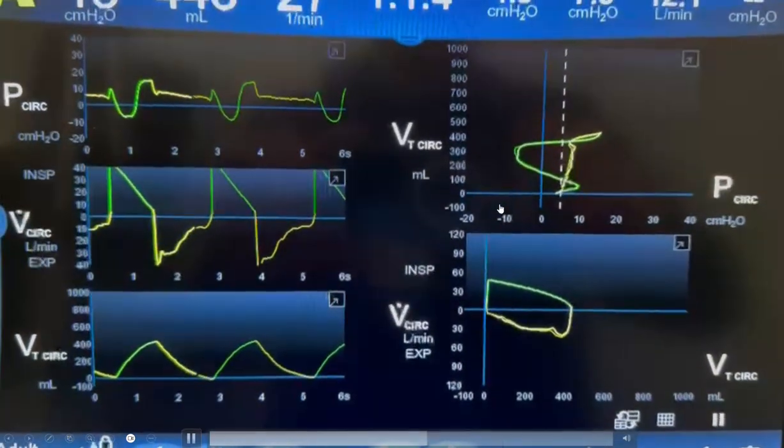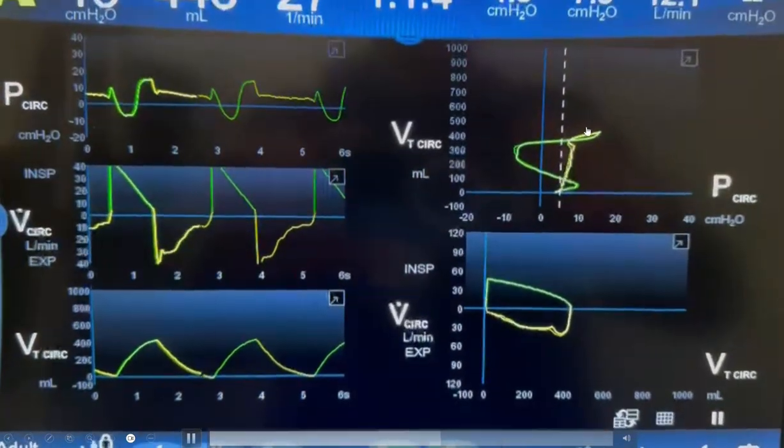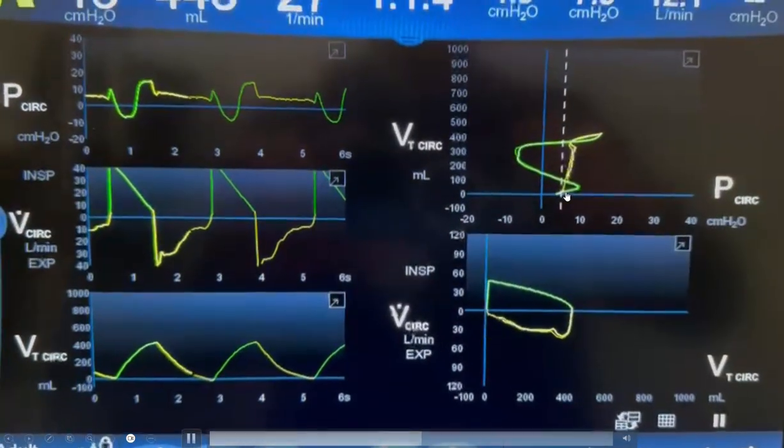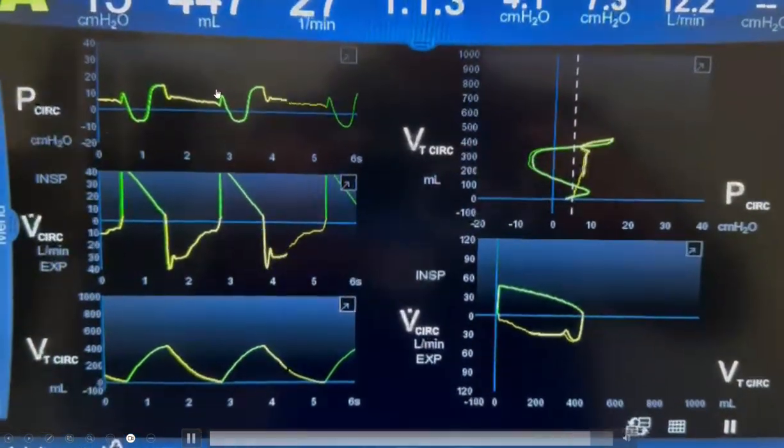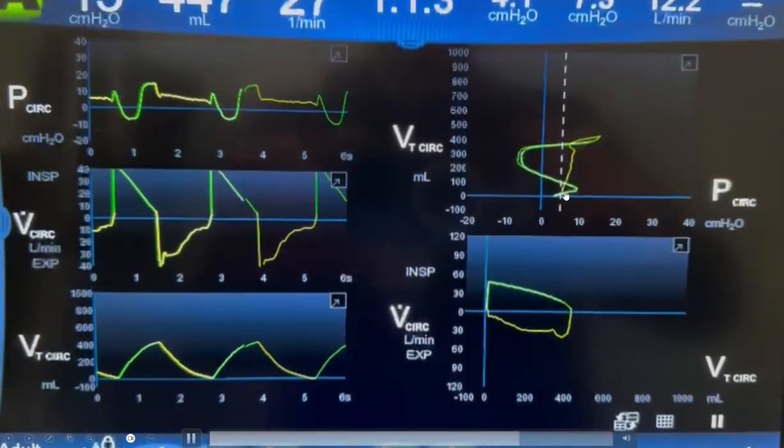You can see the same thing on the volume-pressure loop. Let's trace it: green is inspiration, yellow is expiration. You can see the drop in the pressure initially from the PEEP level to that negative deflection here.